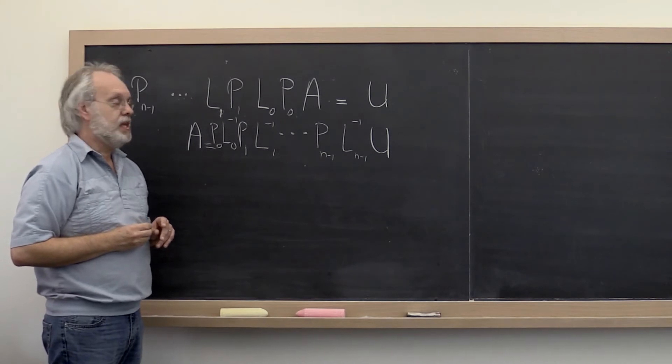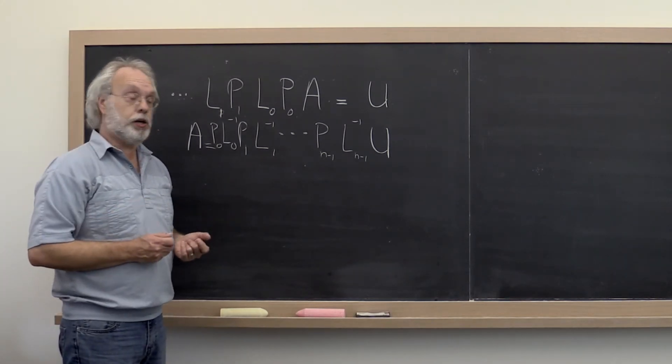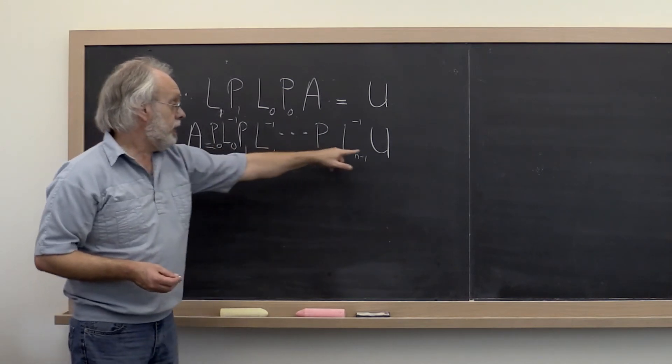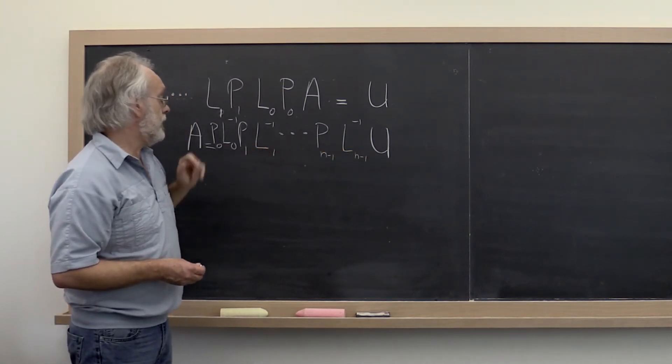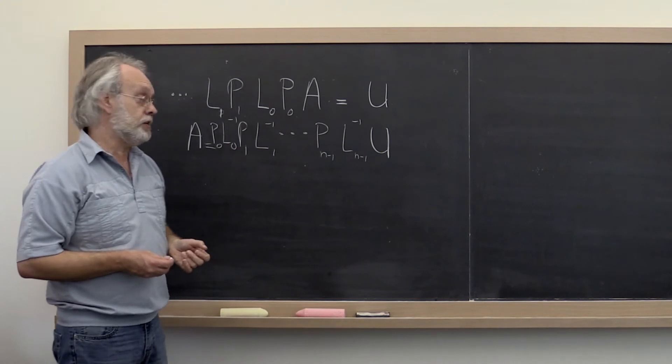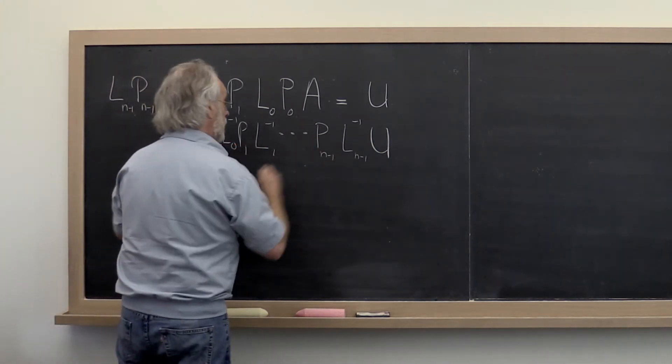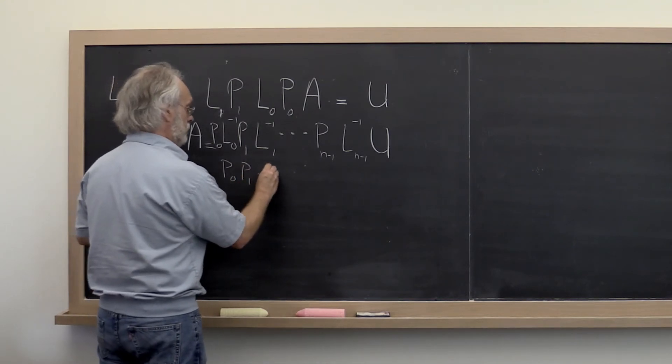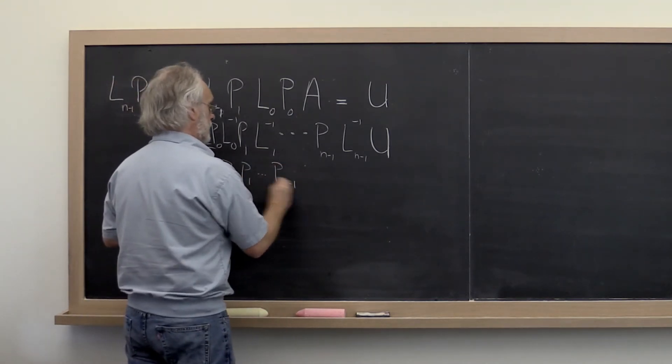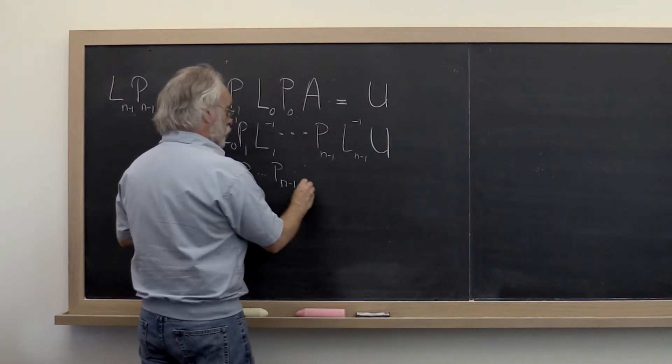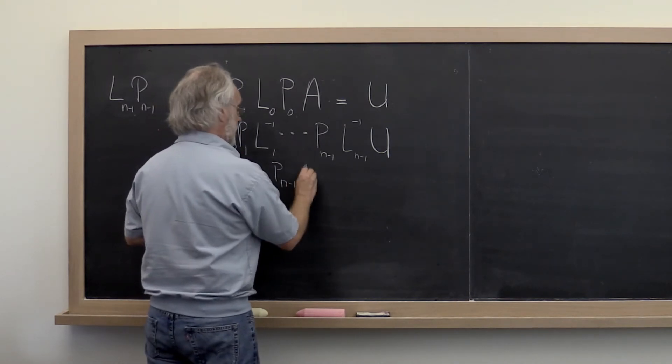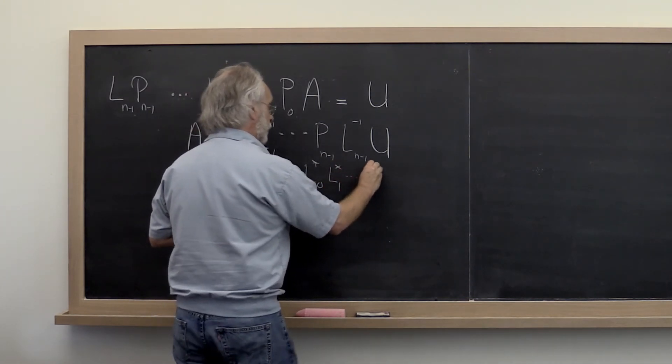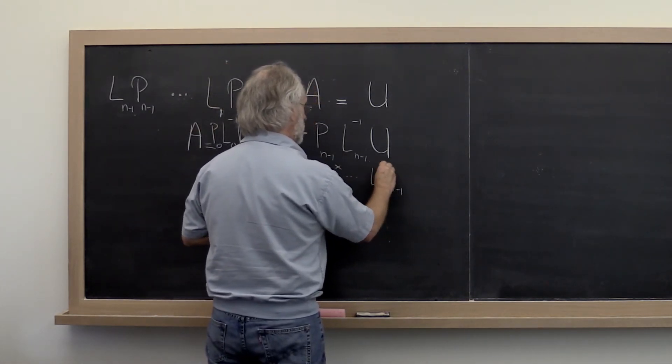Okay? Through some homework you're going to show that actually this right here, because these are Gauss transforms and very special Gauss transforms, all of this can be rearranged so that all of the pivoting happens up front. And then new Gauss transforms, L0 star, L1 star, and so forth, Ln minus 1 star.